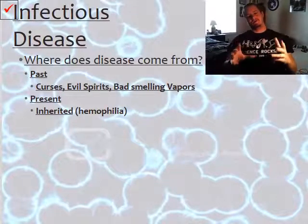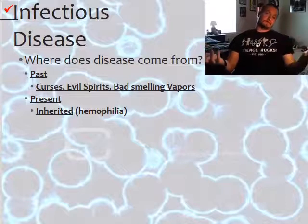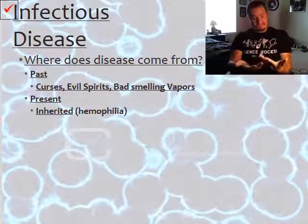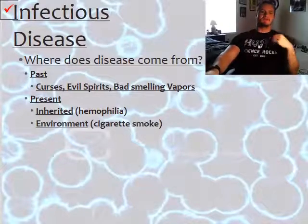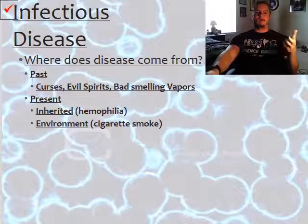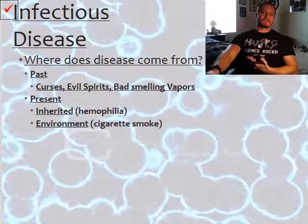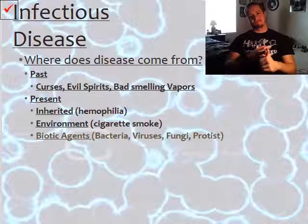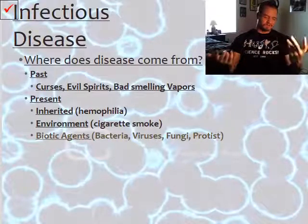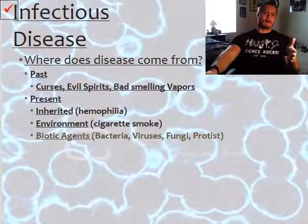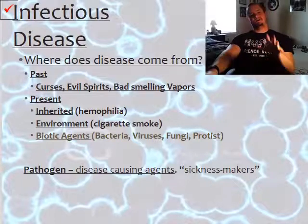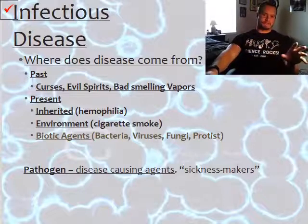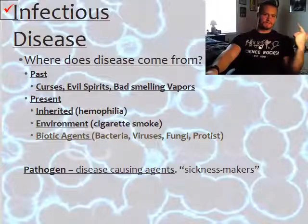In the present, we know disease can be inherited — passed down from generation to generation. For example, hemophilia is the body's inability to produce the clotting factor that stops bleeding. Disease can also come from the environment, like cigarette smoke and other pathogens that can cause cancer and other sicknesses. It can also be caused by biotic agents such as bacteria, fungi, and protists. A pathogen is what we call a disease-causing agent — anything that can make you sick, including environmental factors, biotic agents, and inheritance.